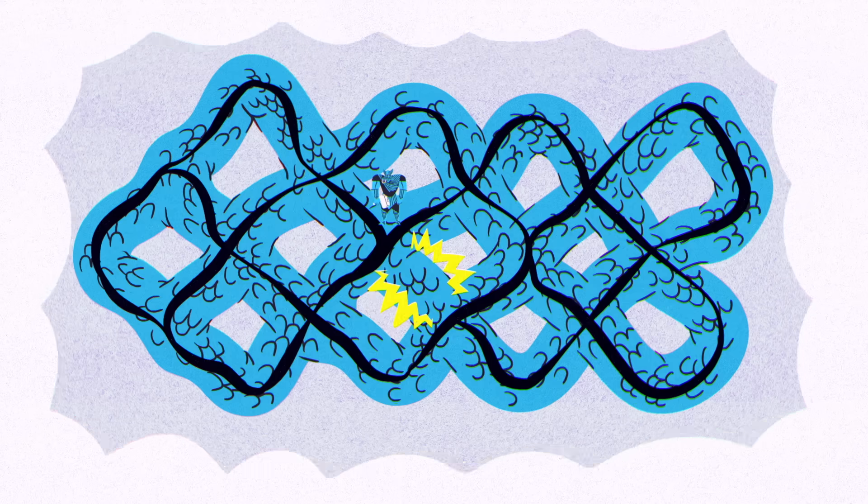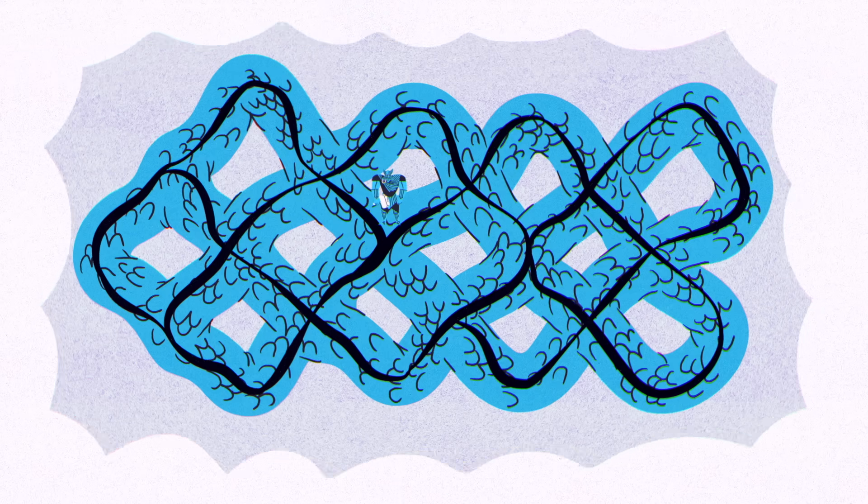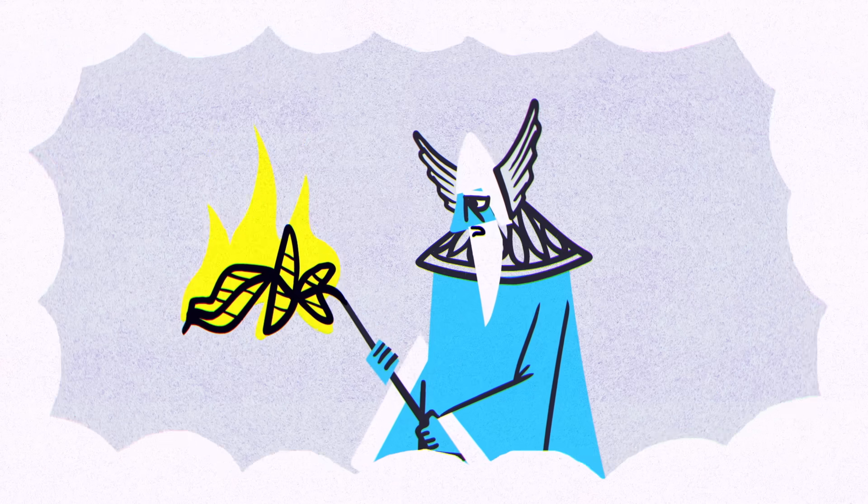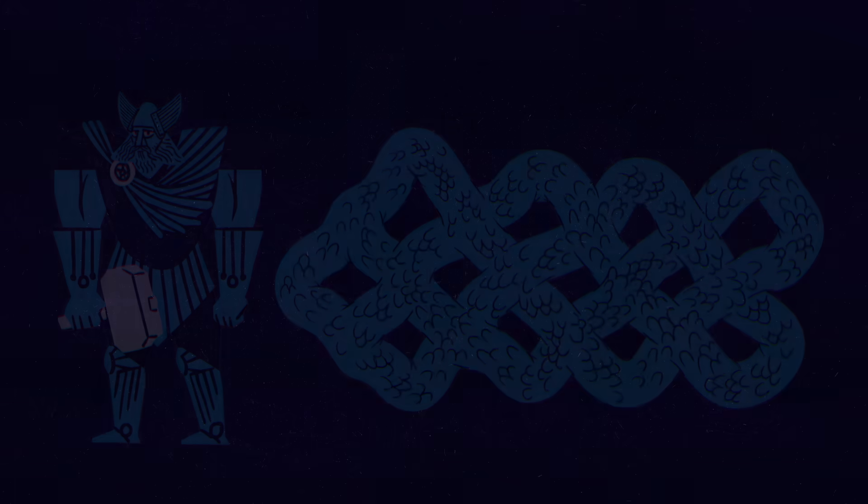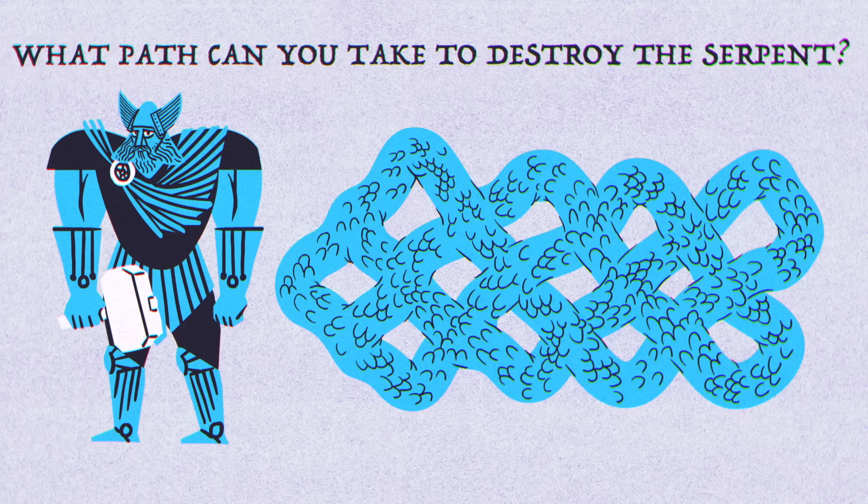But you can make multiple passes through points where the creature intersects its own body. If you leave any portion unzapped, Jormungandr will magically regenerate, Odin's last power will be spent, and Valhalla will fall forever. What path can you take to destroy the serpent?